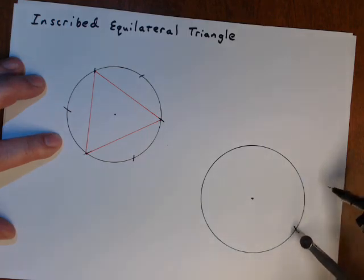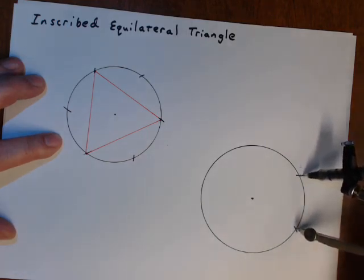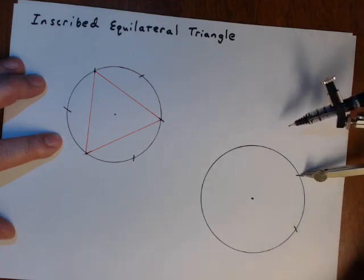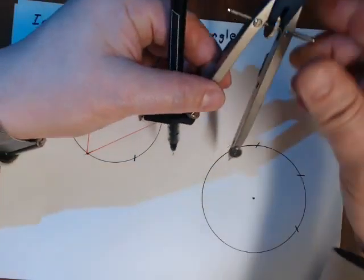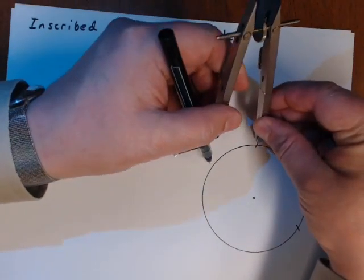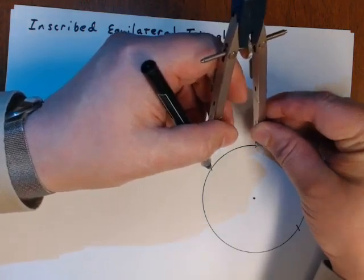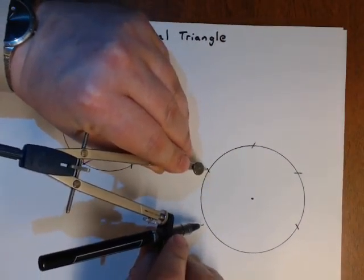So we start with a point. We draw a circle. We don't change the compass.